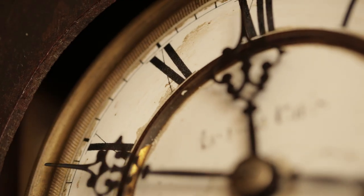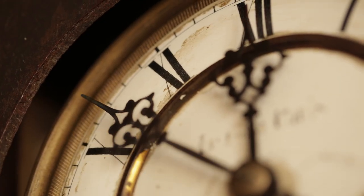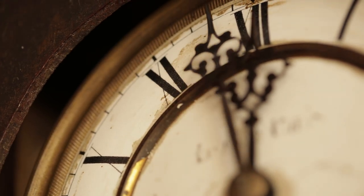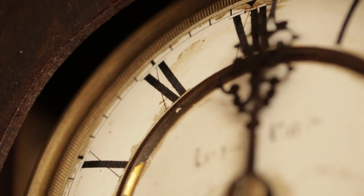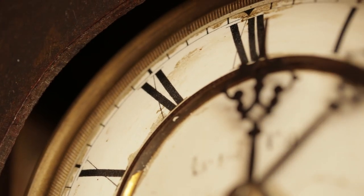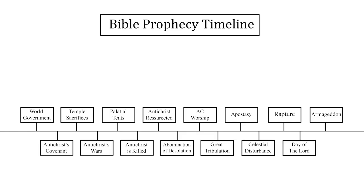I believe that the simple act of defending the order of events is going to help people see things about Bible prophecy that they would not have been able to see any other way. And I think that if you stick around for the first part today about world government, you will see what I mean by that statement.